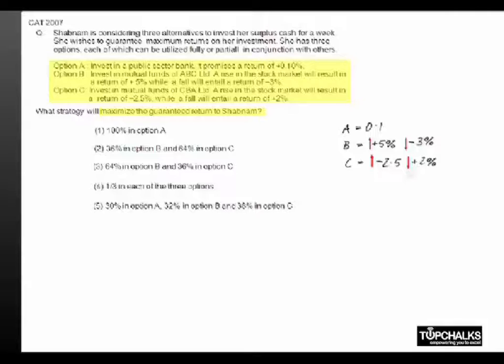Let me take the fraction of money invested in option B as X and the fraction of money invested in C as 1 minus X.